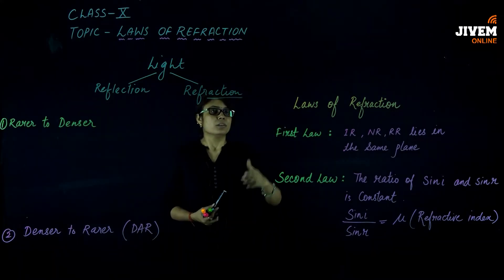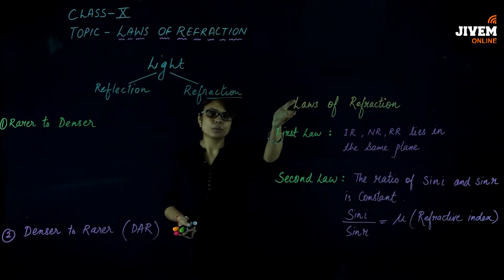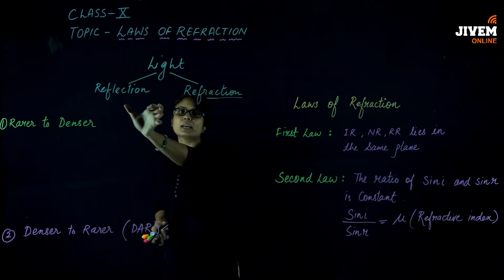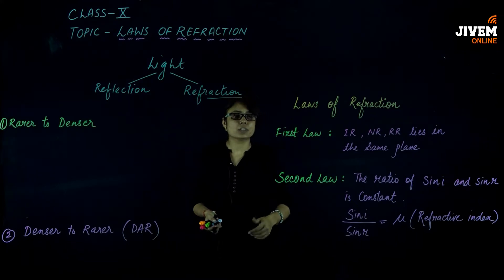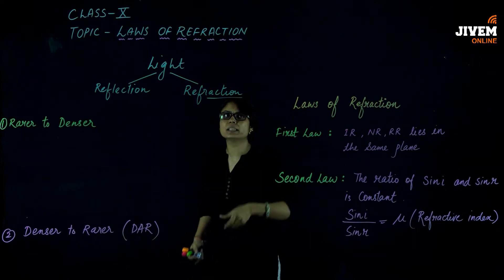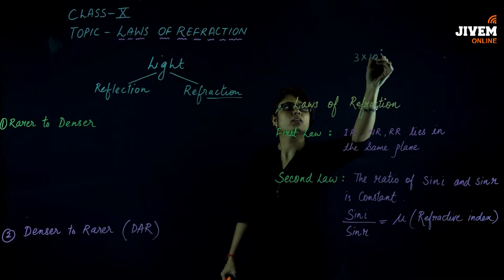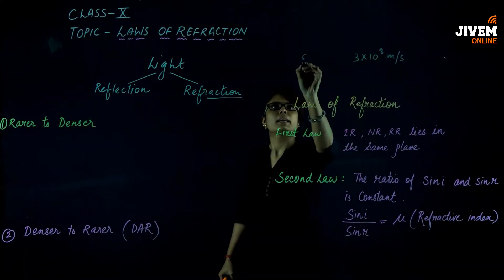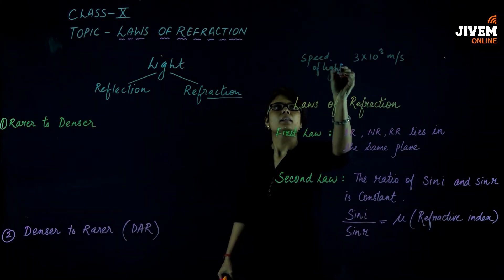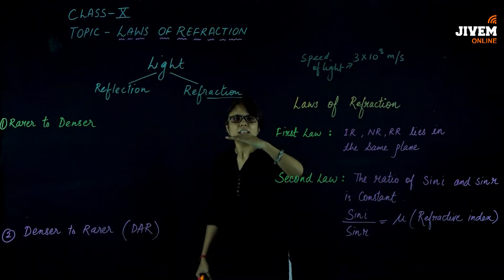We have already studied reflection — when a ray of light travels and falls on a plane surface, it moves back into the same medium with a certain direction. Now, what is the speed of light in normal vacuum? The speed of light in vacuum is 3 × 10⁸ meters per second.